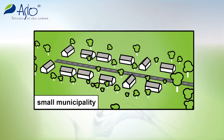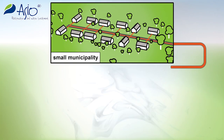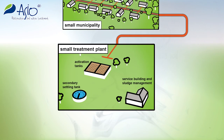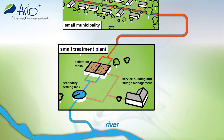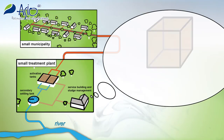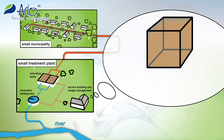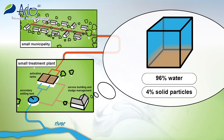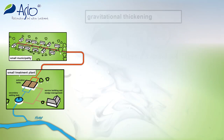In the wastewater treatment process, so-called sludge is formed, representing the residue after the clean water has been separated. The nature of the sludge depends on the wastewater treatment type. However, it can be said that in general the sludge contains significant quantities of water, often more than 96%. This makes its handling difficult and costly.